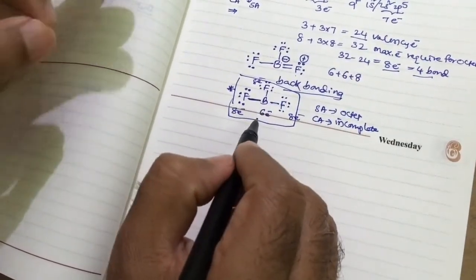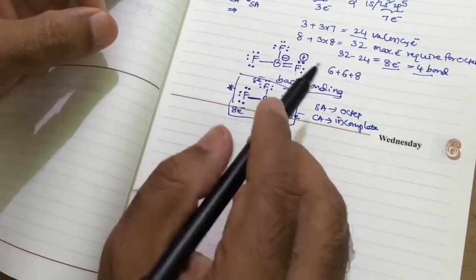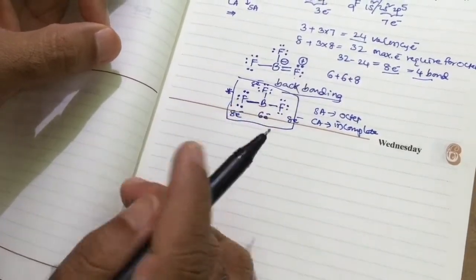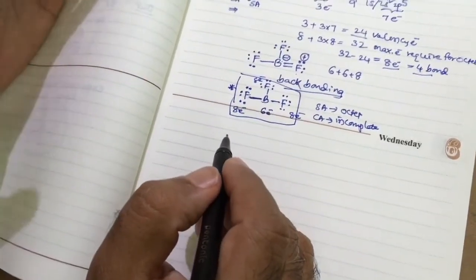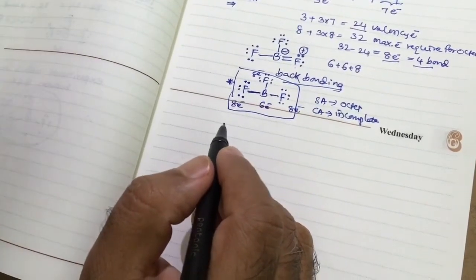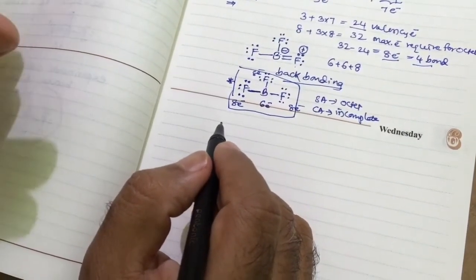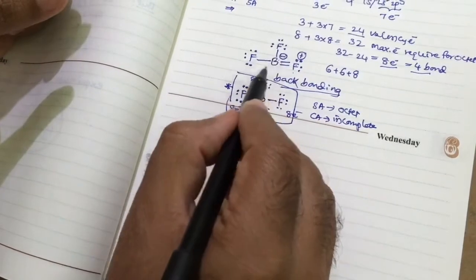Therefore, boron trifluoride is one of the examples for incomplete octet. I hope you understand well why this BF3 is represented with three bonds, not with four bonds of the central atom.